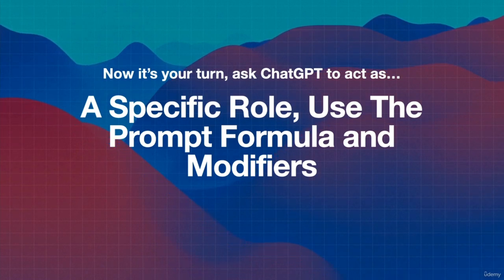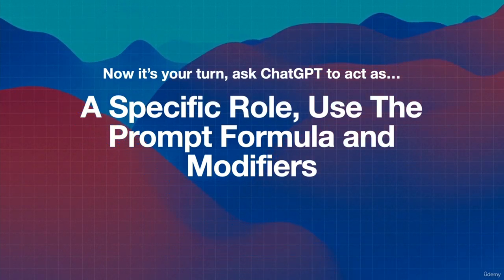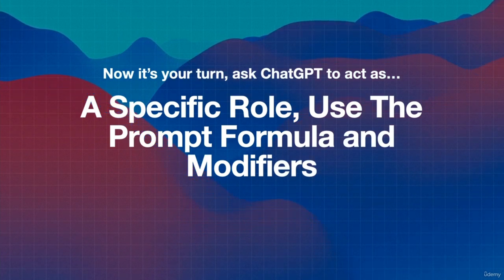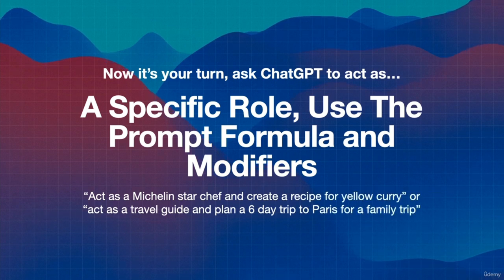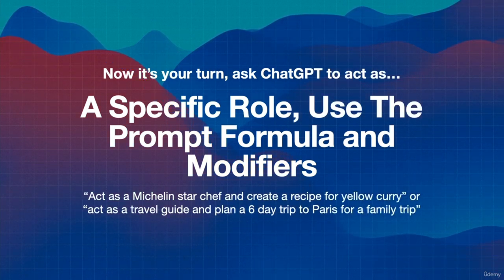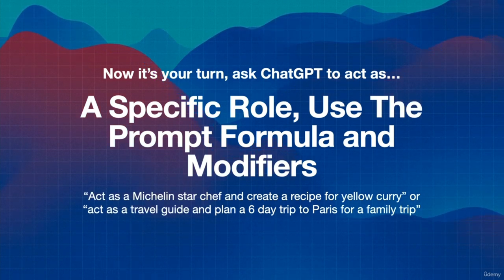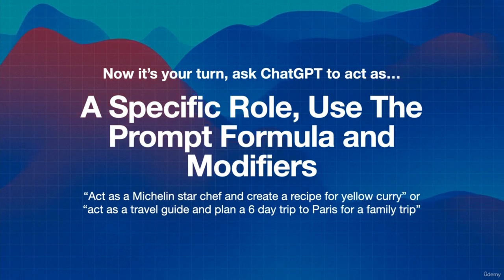Congratulations on making it to the end of this chapter. We went through a lot about the functionality of ChatGPT, how to use prompts and modifiers. Now it's your turn to dive in — ask ChatGPT to act as a specific role in your prompt, use the prompt formula we discussed, and use specific modifiers. For example: 'Act as a Michelin star chef and create a recipe for yellow curry,' or 'act as a travel guide and plan a six-day trip to Paris for my family.' Get more in-depth and specific with your prompts.